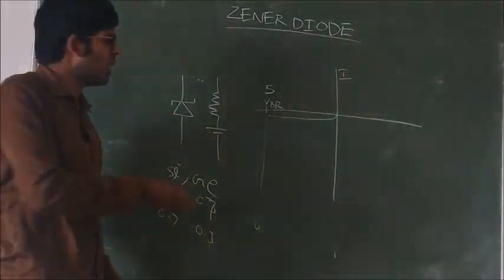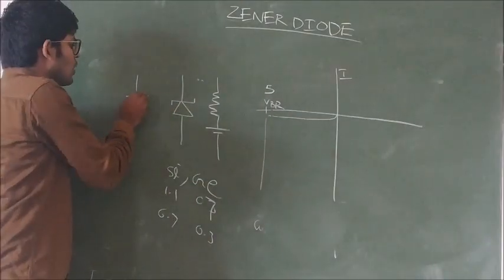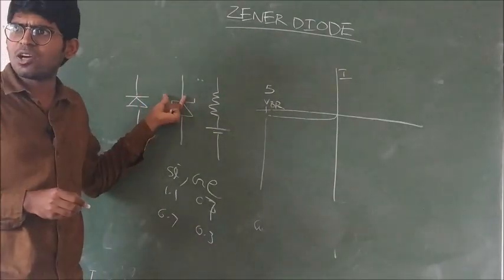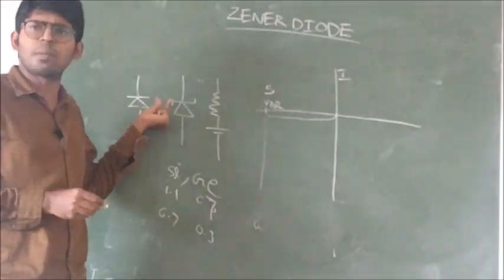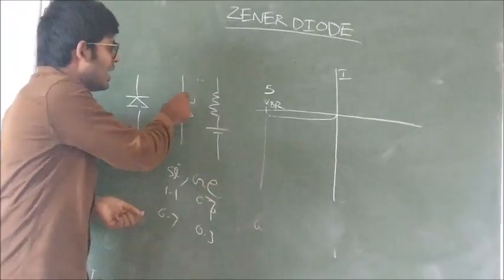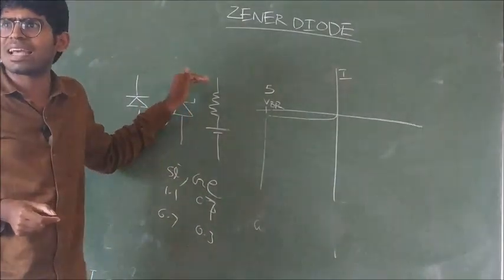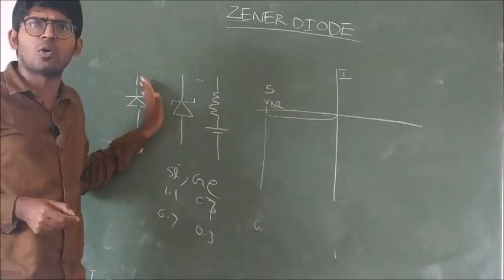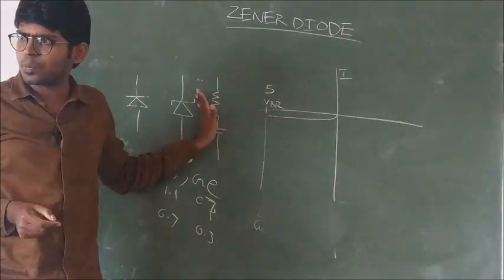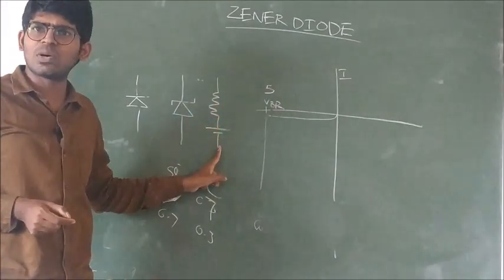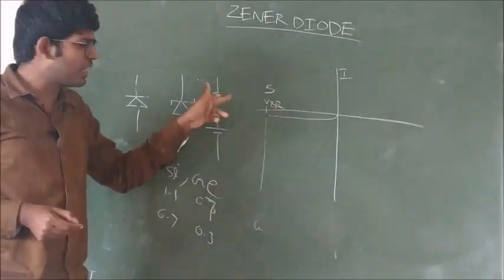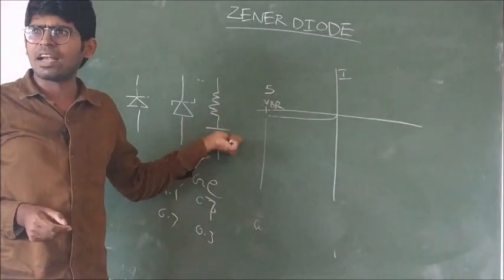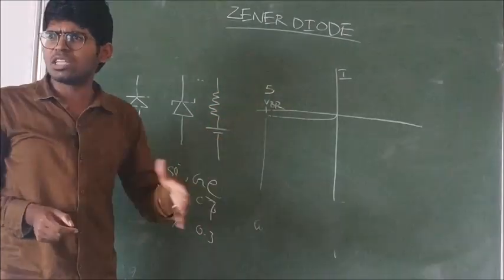This is the electrical circuit symbol of the Zener diode. The normal PN diode electrical circuit symbol is this. What is the difference? Only a Z shape is observed at the cathode. This is the electrical equivalent circuit of the Zener diode, represented with a resistance and a battery.